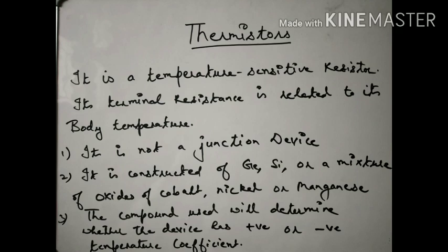Thermistors. What are thermistors? It is a temperature sensitive resistor. Thermistor is called Thermal Resistor. Thermal means temperature — it is a temperature dependent resistor. Its terminal resistance is related to its body temperature. The main point is that it is not a junction diode; it will not form a PN junction. It is constructed of germanium, silicon and a mixture of oxides of cobalt, nickel and manganese — this material is called thermistor.